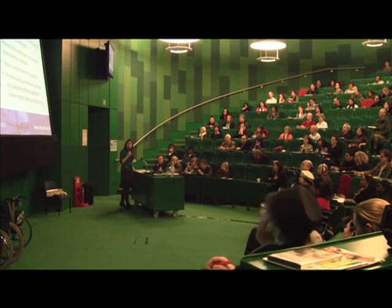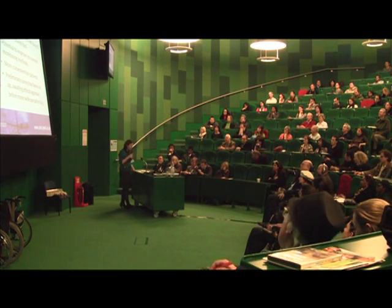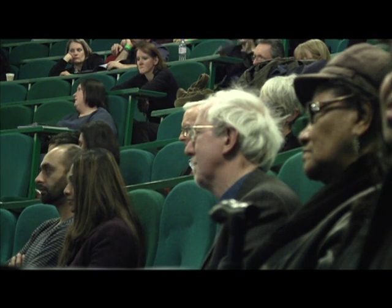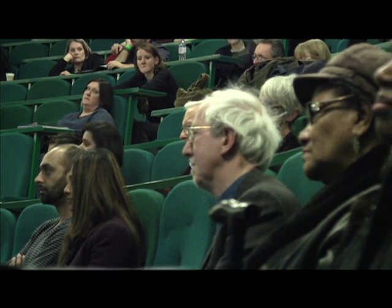It allows us to make certain decisions that are important from a medical point of view. First of all, is there actually a need for any treatment - be that treatment to change the course of the disease, or treatments such as steroids for relapses? It allows us to differentiate between the different kinds of MS, for example progressive MS versus relapsing remitting MS. If there is a need for treatment, then monitoring helps us to decide which treatment, as some treatments are only licensed for more severe cases or cases that are quickly getting worse.